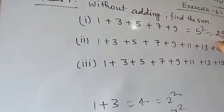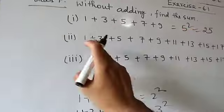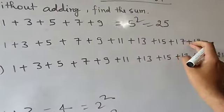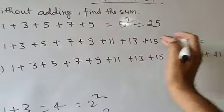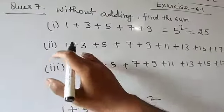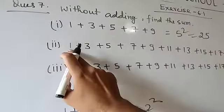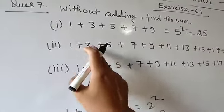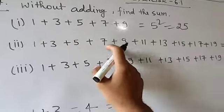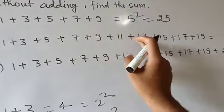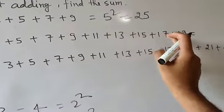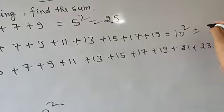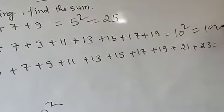For 1, 3, 5, 7, 9, 11, 13, 15, 17, 19 — these are consecutive odd numbers starting from 1. Counting them: there are 10 odd numbers. So their sum is 10² = 100.